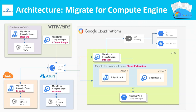This is the architecture diagram of Migrate for Compute Engine. To your left top, you can see the on-premises workloads. To your left bottom, you can see the source and destination — that's going to be our source of migration. Meaning our source can be on-premises environment, AWS Cloud, and Azure Cloud. To your right, you can see the destination, which is going to be our migration target. Your source and destination is connected using a VPN.